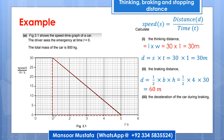To avoid confusion about the base value, simply subtract the initial time value from the final time value. In this case, final value is 5 and initial value is 1, so base is 4, and height is 30. Therefore the braking distance is one-half times 4 times 30, which equals 60 meters. The stopping distance is thinking distance plus braking distance: 30 plus 60 equals 90 meters total.